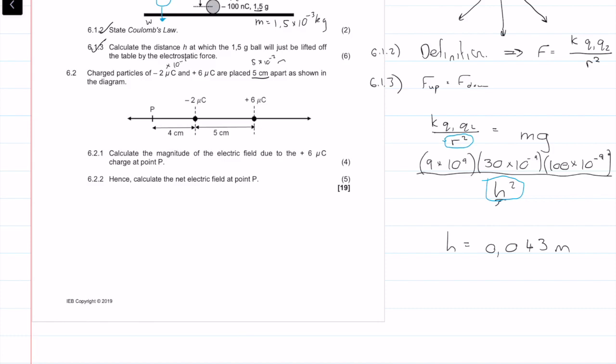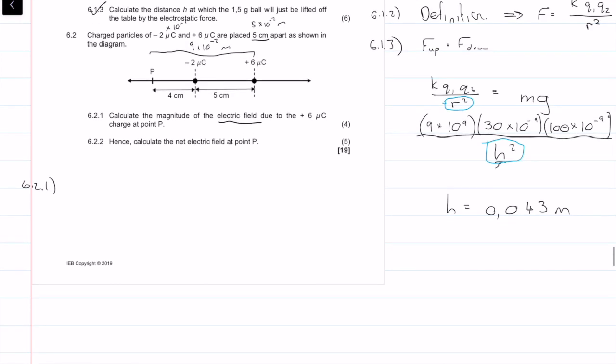They are placed apart as shown in the diagram. 6.2.1: Calculate the magnitude of the electric field due to the 6 microcoulombs charge at point P. That distance right there is 4 plus 5, which is 9 times 10 to the minus 2 meters. We want to work out the magnitude, so we don't care about direction of the electric field.